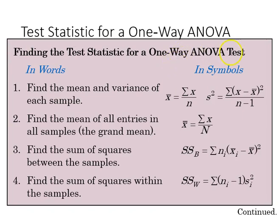The test statistic for the one-way ANOVA test is here. We find the mean and variance of each sample, and so we have x bar as the sum of x over n, just the mean, and the variance as simply the squared deviations over n minus 1.